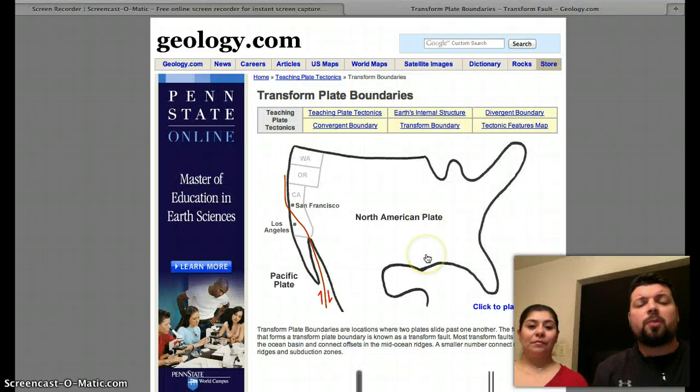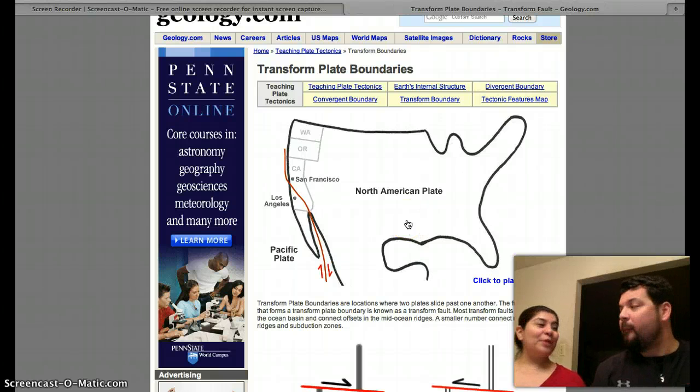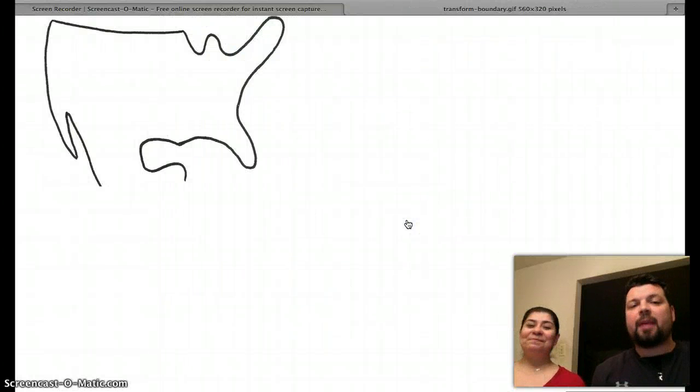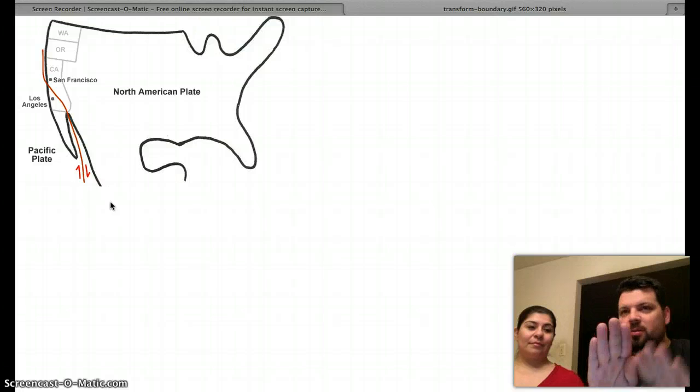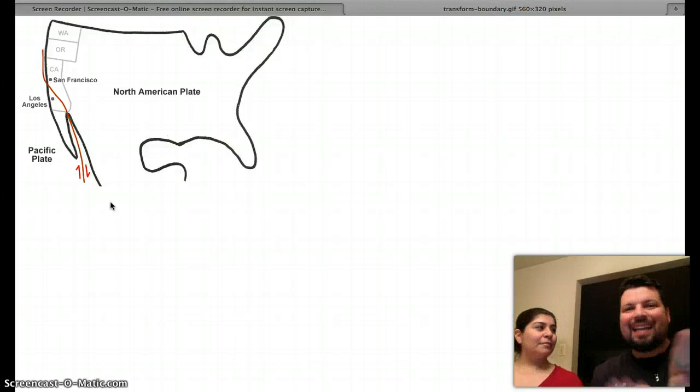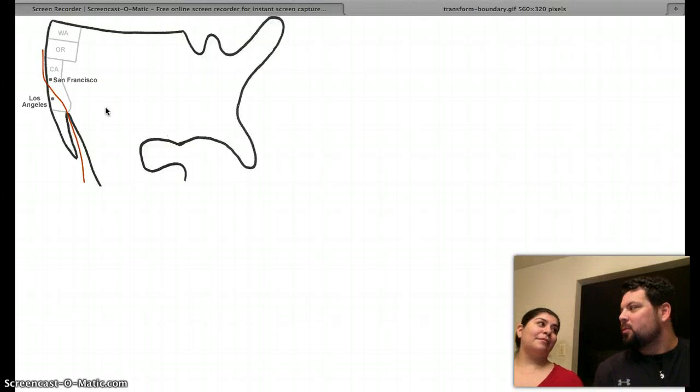Now, we've gotten through two of the three boundary types that we're going to do. Let's go to the last one here. This is the transform boundary. This is where you're from. Where are you from? From California. You're from California. That's right. So let's pull up a map here, a little animation of the United States. Now, this particular boundary travels in a particular direction. It doesn't go away, divide. It doesn't go towards, but it goes up and down, side to side. Kind of like friction when you rub your hands together. Yeah. Kind of like side to side.